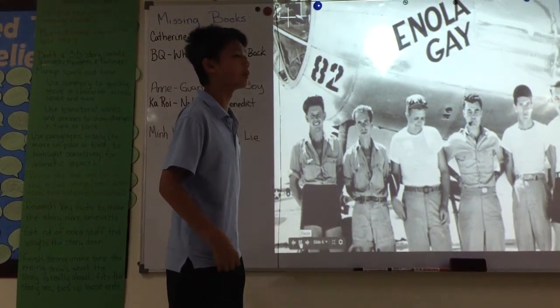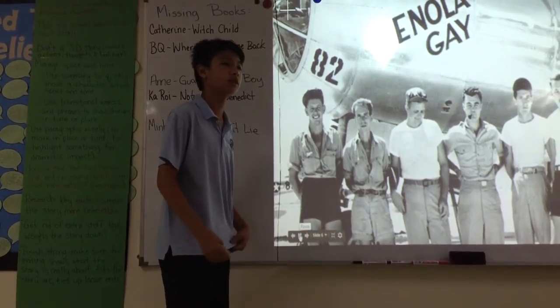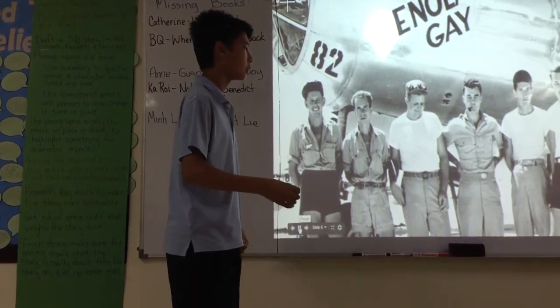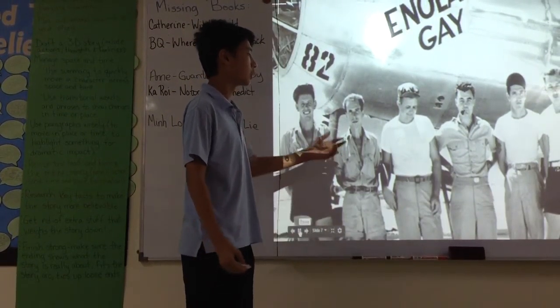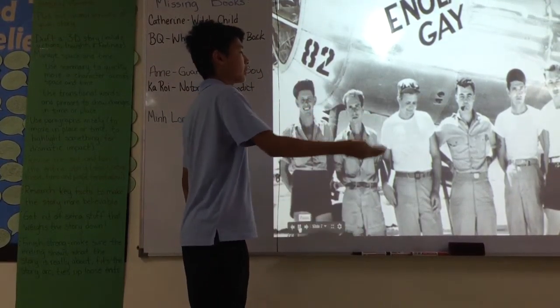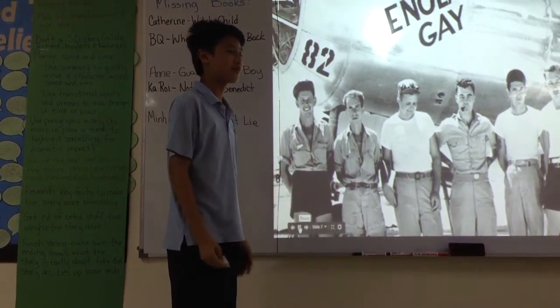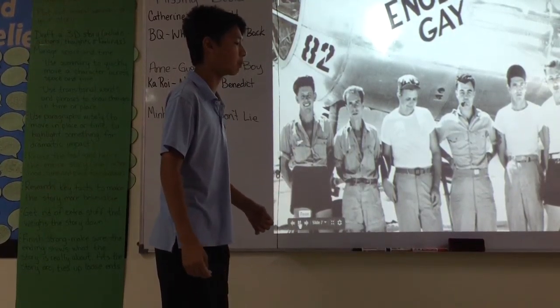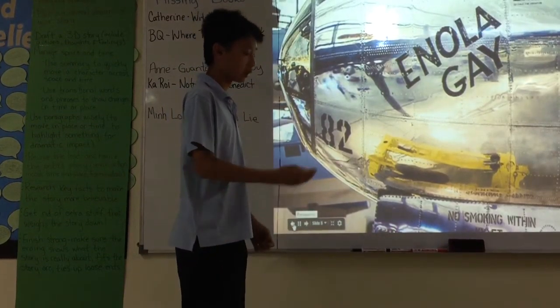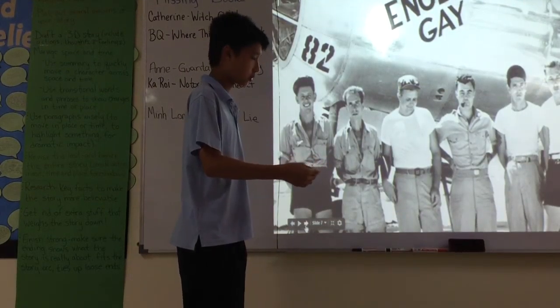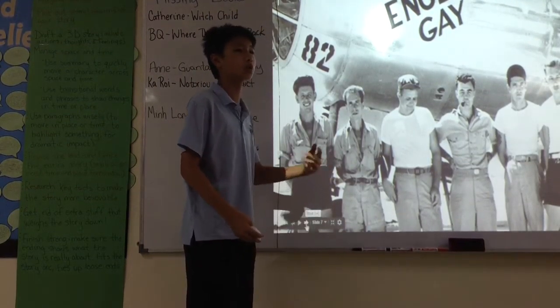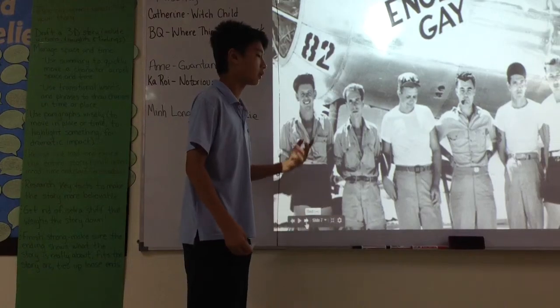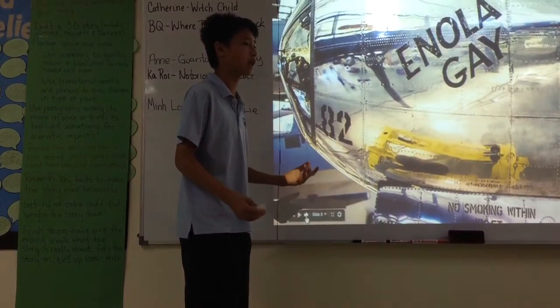One of the key events, the making of the bomb, and the delivery, and where they sent it to. The crew member, Enola Gayes, they were the people that delivered the bomb. And it set its place in World War II, specifically in America, where they assembled the atomic bomb.